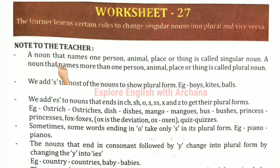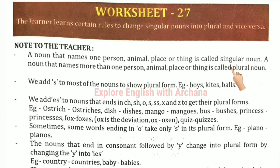A noun that names one person, animal, place or thing is called a singular noun. A noun that names more than one person, animal, place or thing is called a plural noun.